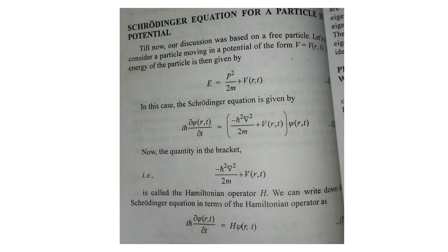For a particle moving in a potential V, it possesses kinetic energy and potential energy: E equals p²/2m plus V. You can write the Schrödinger equation by replacing E with its operator i·h-bar·∂/∂t, giving i·h-bar·∂ψ/∂t equals (minus h-bar²/2m·∇²ψ + V·ψ). The quantity in brackets is termed the Hamiltonian H, so the Schrödinger equation can be written as i·h-bar·∂ψ/∂t equals H·ψ. Thank you, students.